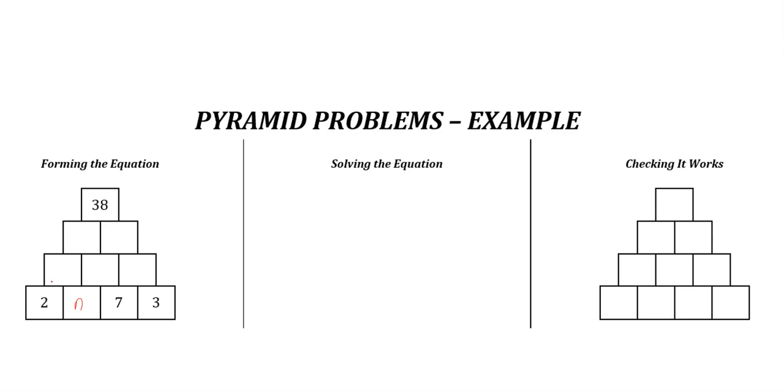in here. So if we add n and 2 together, you get n plus 2. Similarly here, n plus 7. And here, 7 and 3—well, there's no n in this, so those just add up to 10. Then we